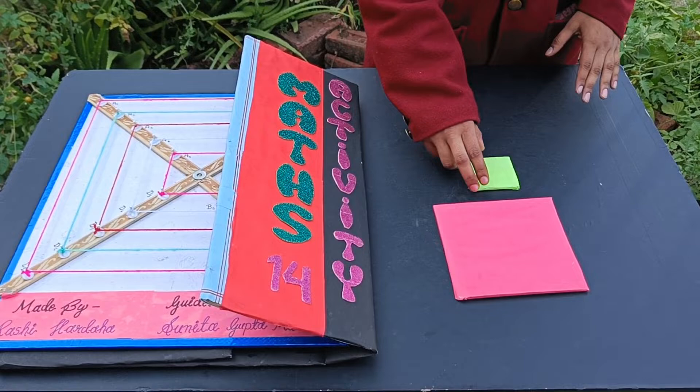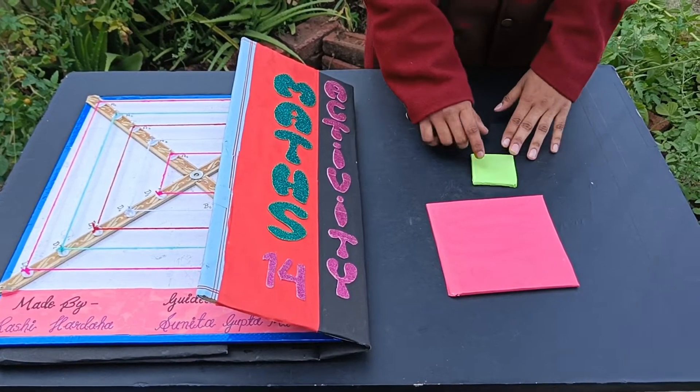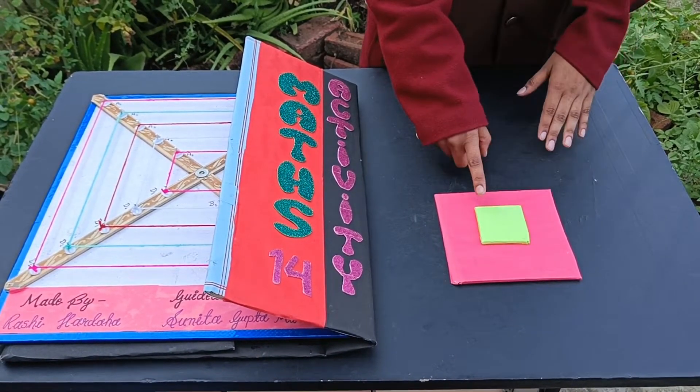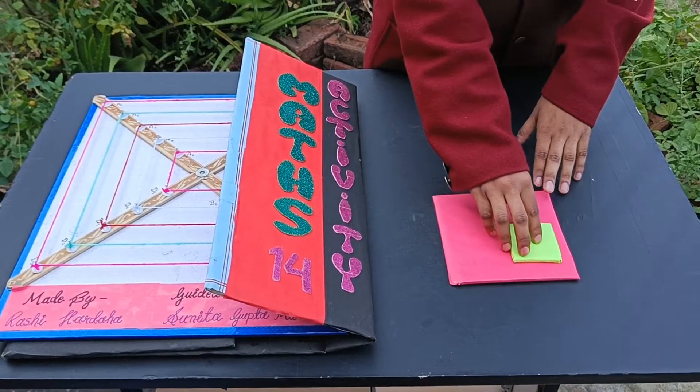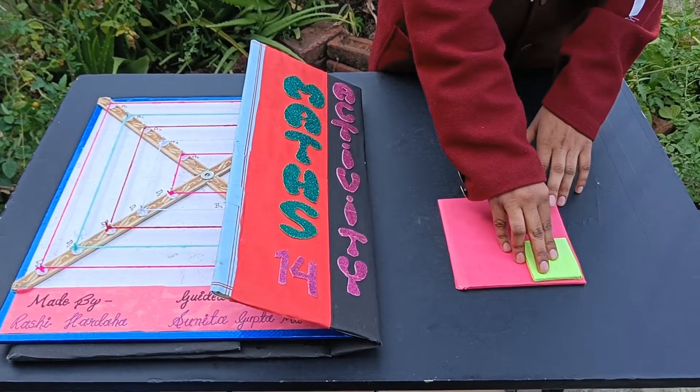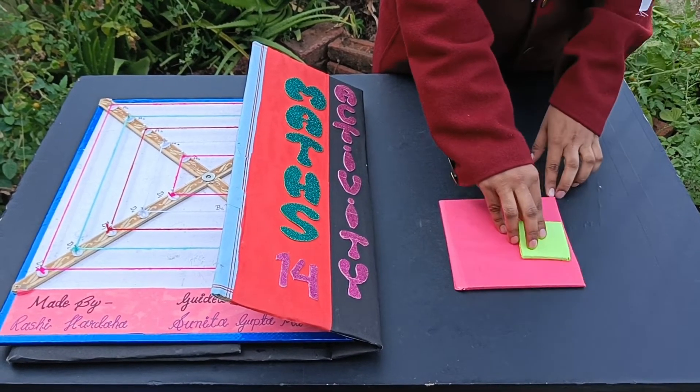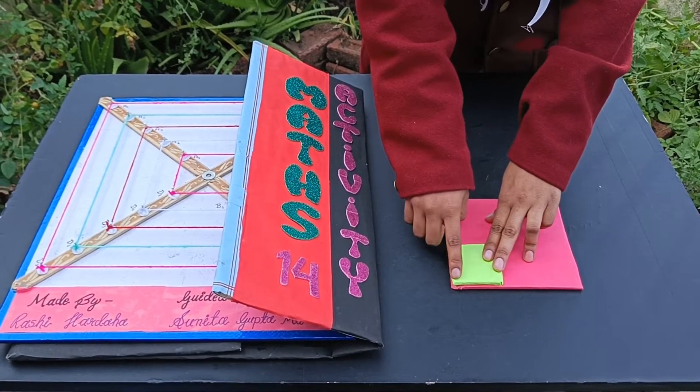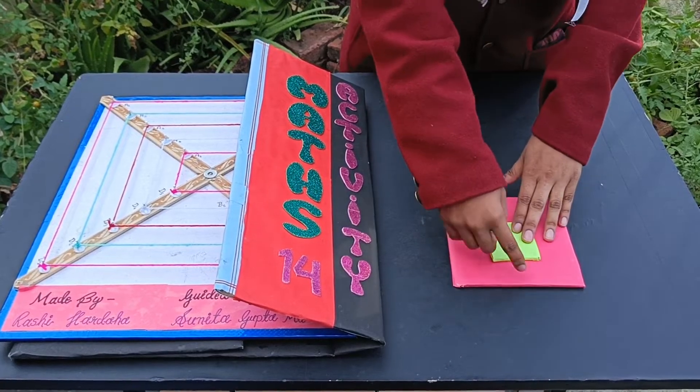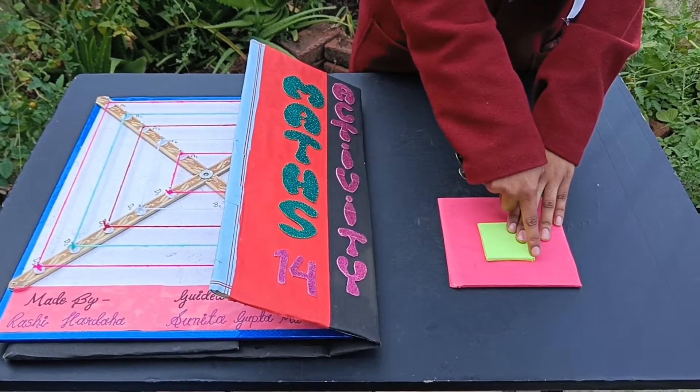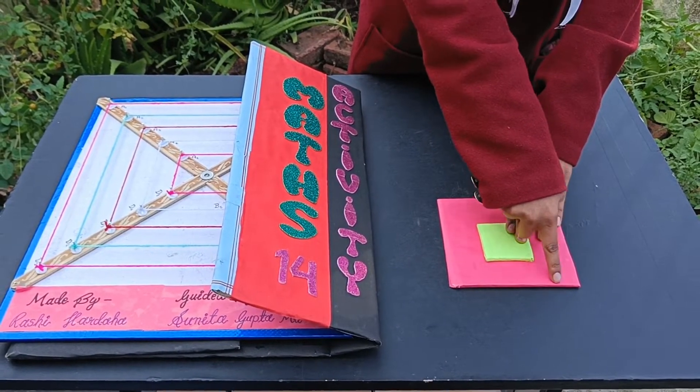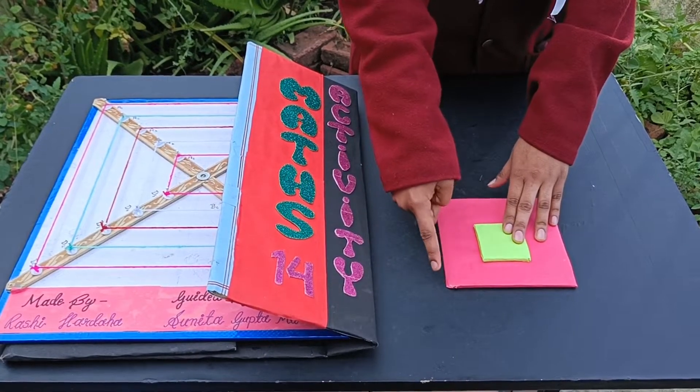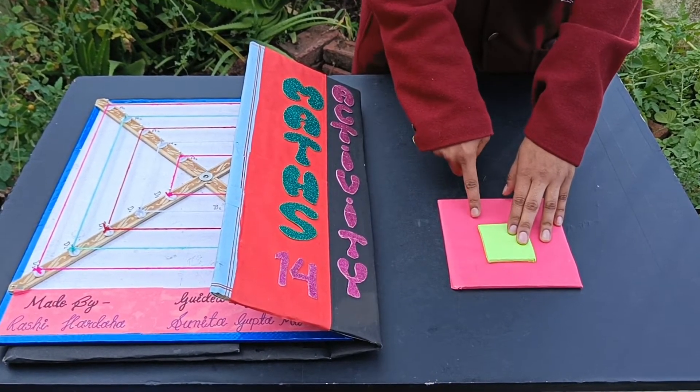Here, two polygons present, polygon A and polygon B. The corresponding angle of polygon A is equal to the corresponding angle of polygon B. Here, this angle is equal to this angle, this angle is equal to this angle, this angle is equal to this angle, and this angle is equal to this angle. Similarly, the ratio of this side and this side are same.